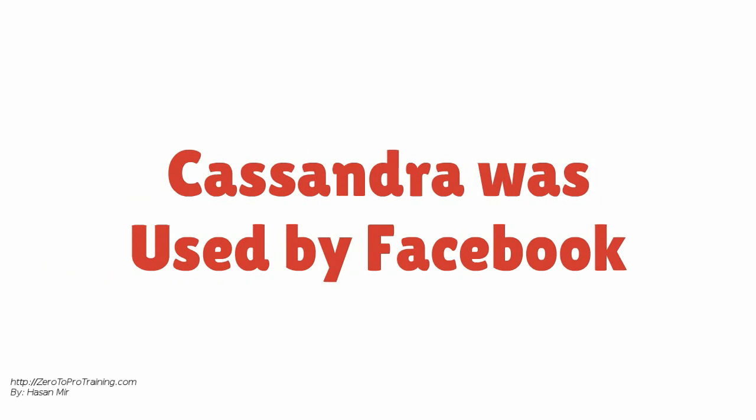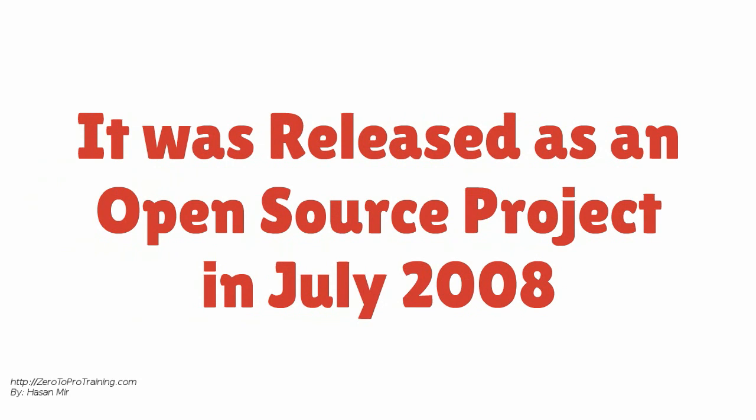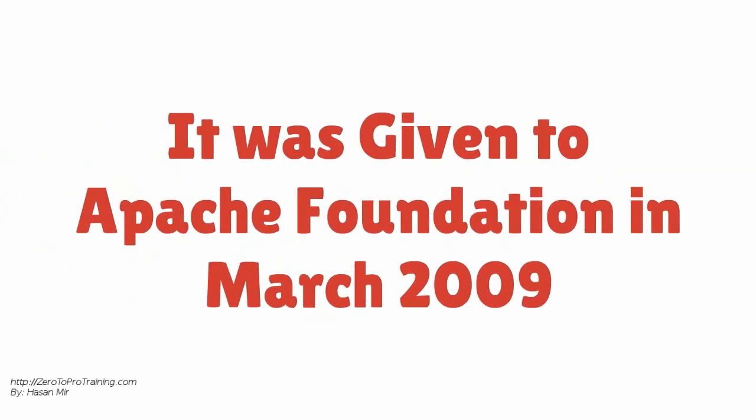Cassandra had been in production at Facebook for a while. Then it was released as an open source project on Google Code in July of 2008. It was accepted by the Apache Foundation as an incubator project in March of 2009.